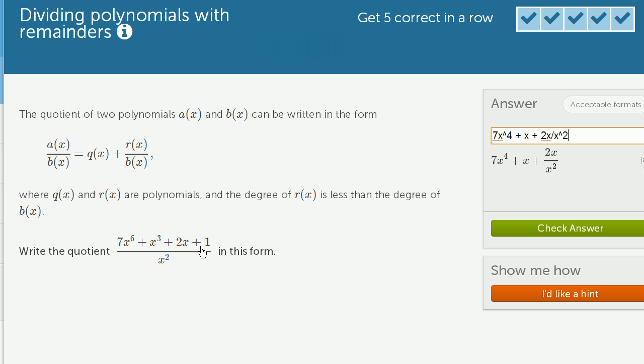And then you could write plus 1 over x squared. So you could do this, plus 1 over x squared. So you could write it like that. But that's not exactly the form that they want.